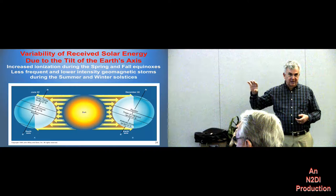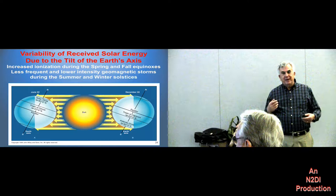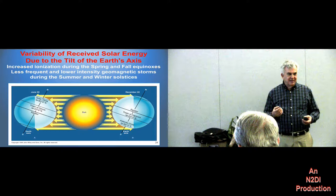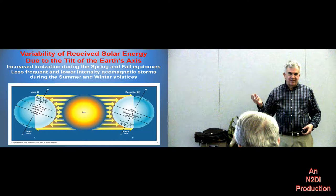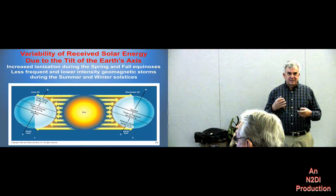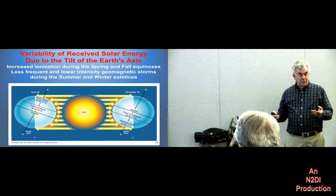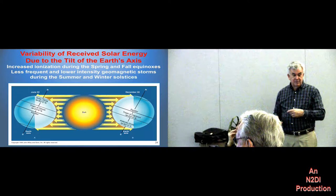It's billions of tons per second, but compared to the size of the sun, it's totally insignificant. The sun has been radiating countless hundreds of billions of tons per second of particles for billions of years, and it's hardly made any difference at all. But for us who are interested in HF radio and the effects on the ionosphere on the earth, it makes a big difference.